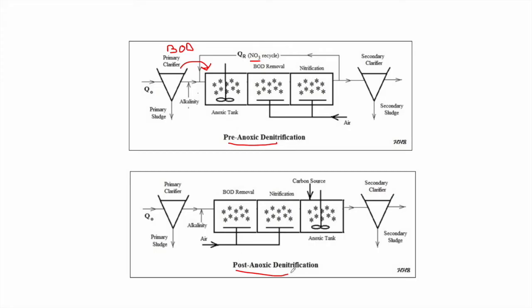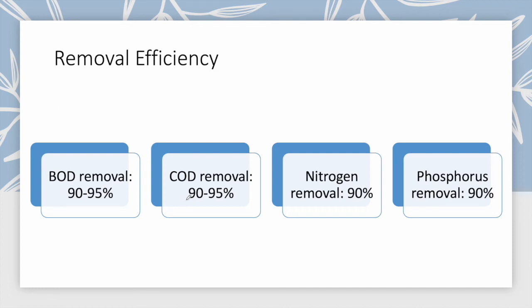For post-anoxic denitrification, since the BOD removal tank comes before the anoxic tank, we must add an external carbon source such as methanol. However, we do not face the NO3 recycling problem, because the nitrification process comes before the anoxic tank, so no recycling of NO3 is needed.